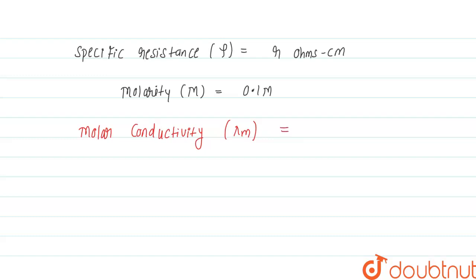The formula for molar conductivity is: lambda M equals k into 1000 upon M, where k is the conductivity and M is the molarity of the solution. We know the molarity, but we do not know the conductivity of the solution, so first we have to find the conductivity.